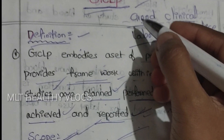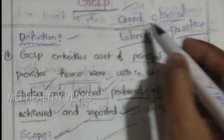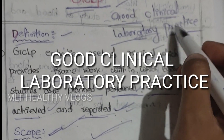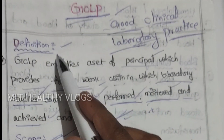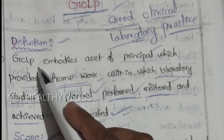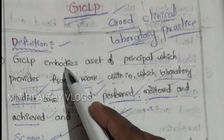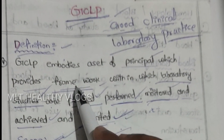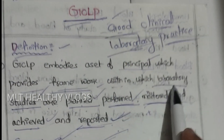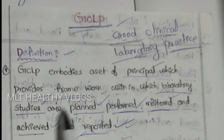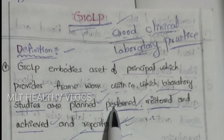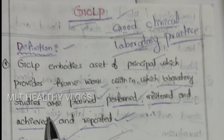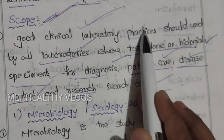Today we are discussing about GCLP. GCLP means Good Clinical Laboratory Practice. Definition of GCLP: GCLP embodies a set of principles which provides a framework within which laboratory studies are planned, performed, monitored, achieved, and reported.